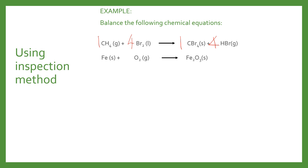Now we move on to the second example. The species with the most complicated chemical formula is iron(III) oxide. So we put one in front of iron(III) oxide, which means we have two iron on the product side. To balance it, we put two in front of iron, giving two iron on the reactant side and two on the product side. We also have three oxygen from iron(III) oxide, so we multiply O2 by 3/2 to get three oxygens on the reactant side and three on the product side.